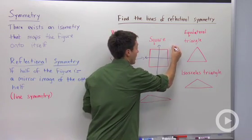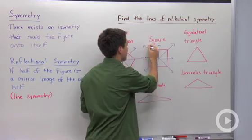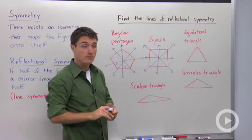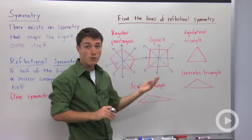I could also draw in some diagonal lines of symmetry, and those would enable me to fold the figure back onto itself. So this regular pentagon had five, this square has four lines of symmetry.